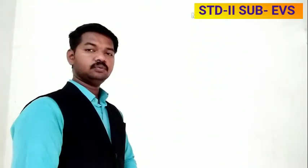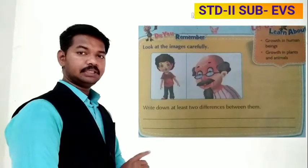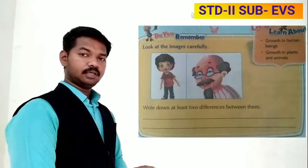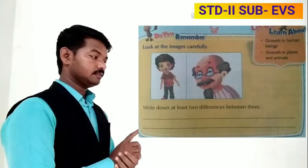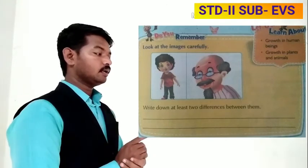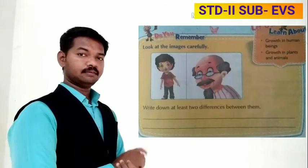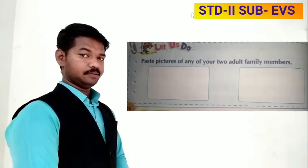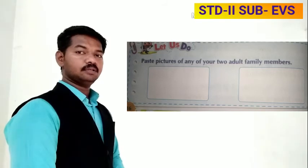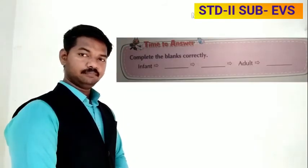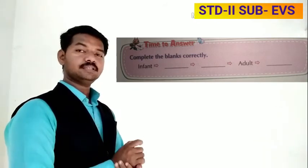These are the words to copy in your notebook. See page number 15 — a picture is given there. Observe the picture and write the difference between the two pictures: one is a child and one is an old man. Find two differences and write them. On page number 16, paste a photograph of an adult person from your family. On page number 17, fill in the blanks with the stages in human growth.